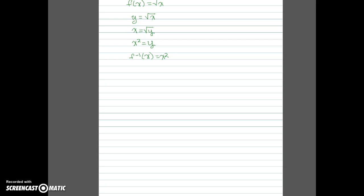Now let's take a look at a table of values to see what points we should plot to graph each of these functions. For the original function f of x equals square root of x, I'm choosing x values that are perfect squares: 0, 1, 4, and 9, giving outputs 0, 1, 2, and 3. The domain of this function is x greater than or equal to 0 because we can't plug in negative values under a square root.